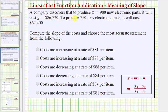A company discovers that to produce x = 980 new electronic parts, it will cost y = $86,720. To produce 750 new electronic parts, it will cost $67,400.